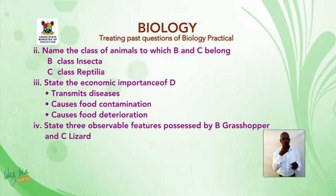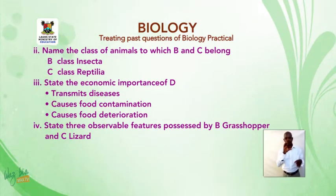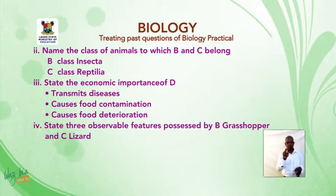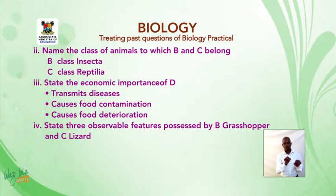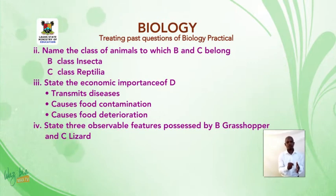Roman numeral 2: name the class of animals to which B and C belong. B, which is the grasshopper or locusts, belongs to class Insecta. C, which is the lizard, belongs to class Reptilia. Note: you must start Insecta and Reptilia with a capital letter.